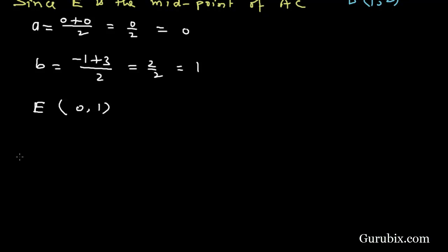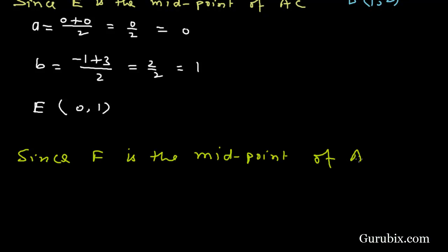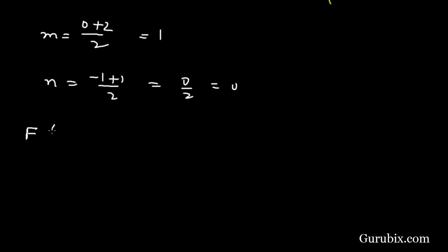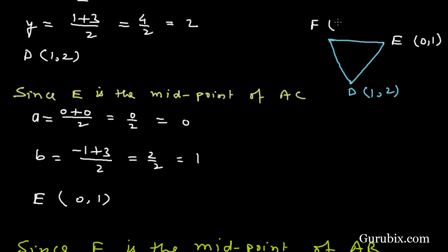Now we shall move on to side AB. Since F is the midpoint of AB, the value of M is (0 + 2) / 2 = 1, and N is (-1 + 1) / 2 = 0/2 = 0. Therefore, the coordinates of F are (1, 0).